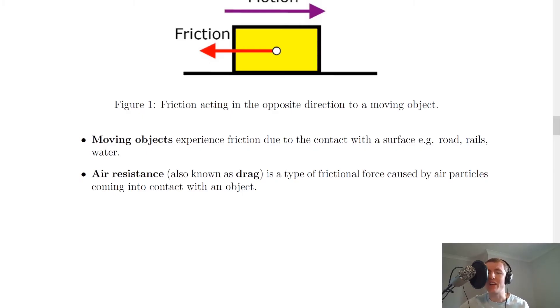In order to decrease friction, on the other hand, you could use lubricants, for example, oil or a thin layer of air, such as in an air hockey table. Or you could streamline the shape of an object, which is what car manufacturers do for sports cars, and that is going to decrease friction.